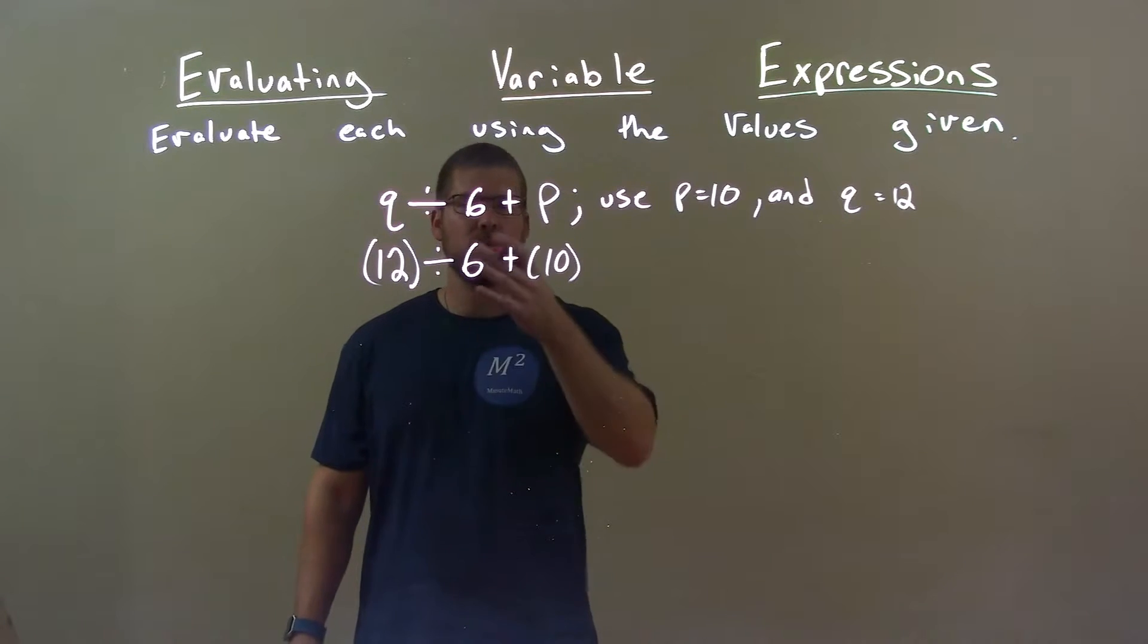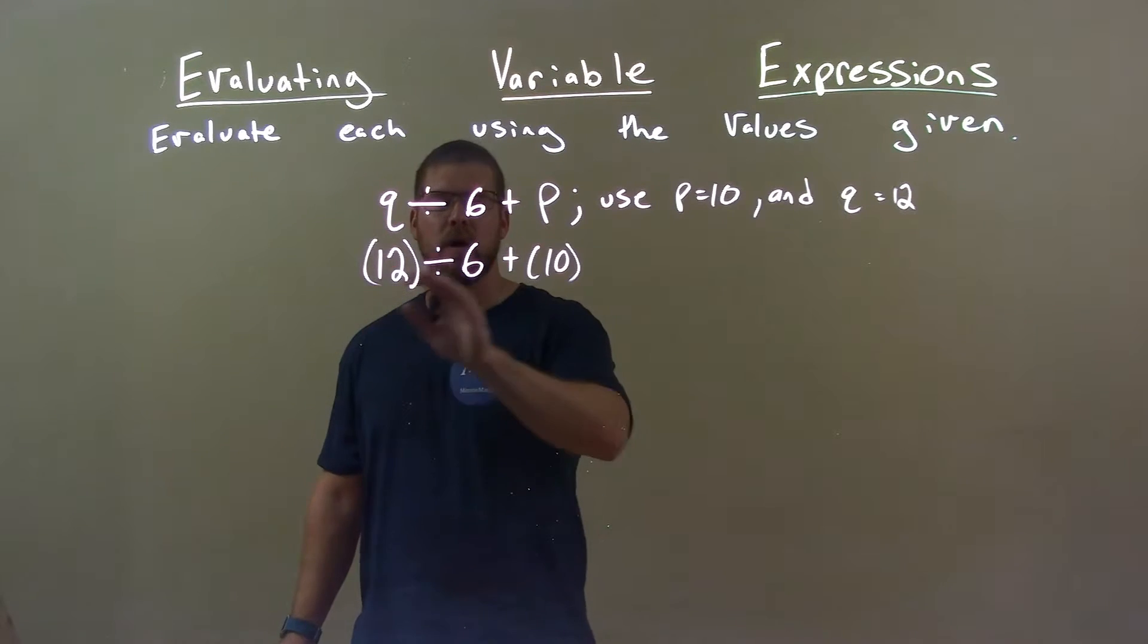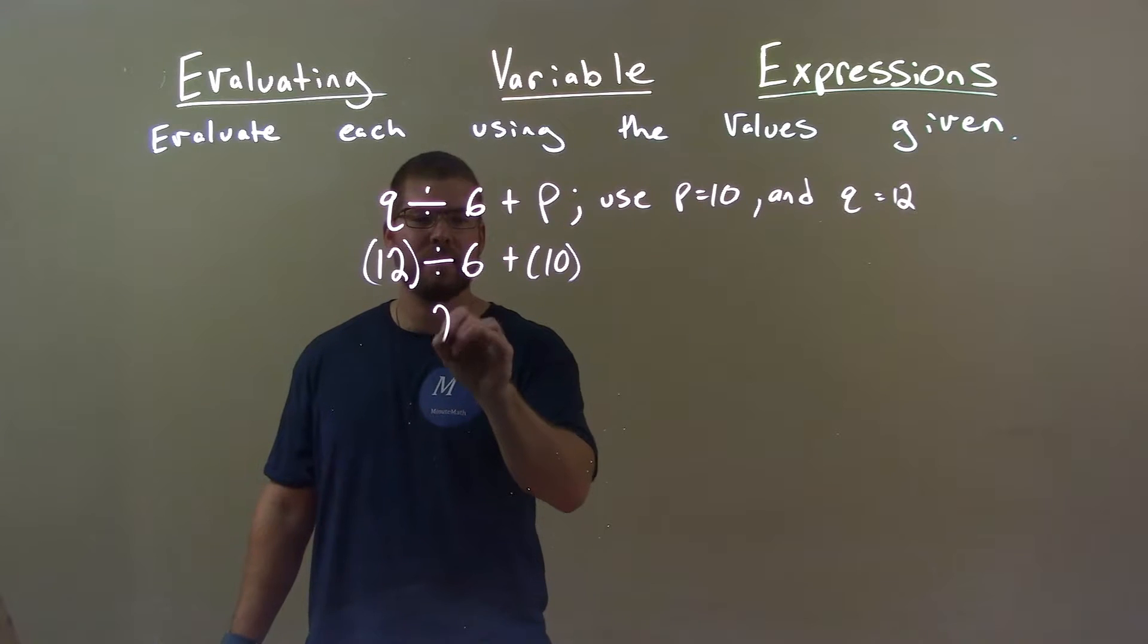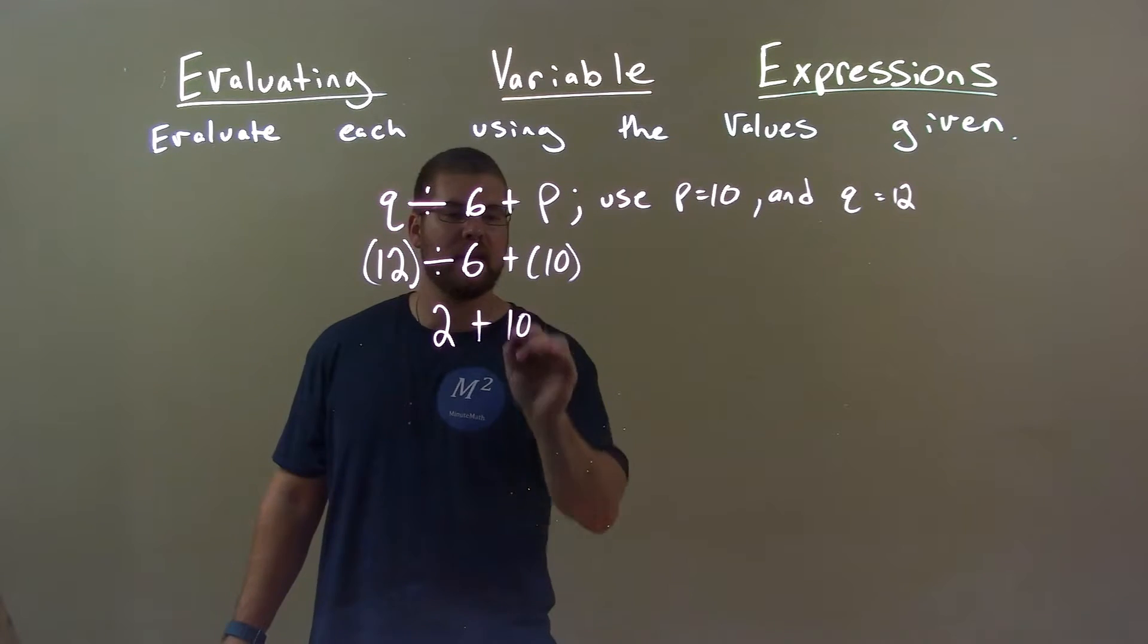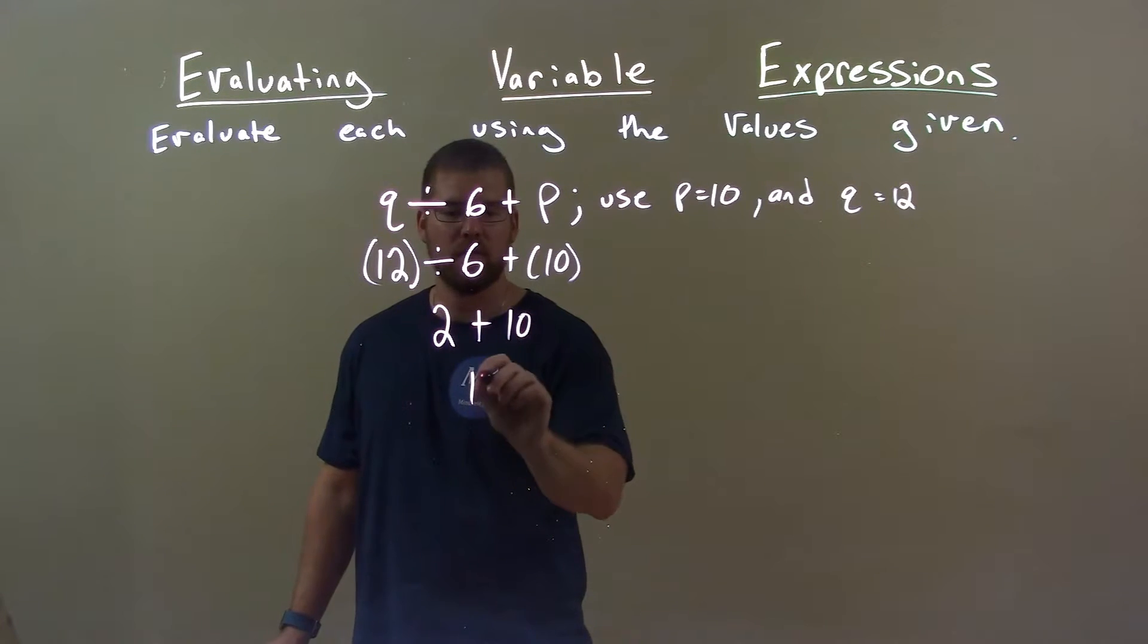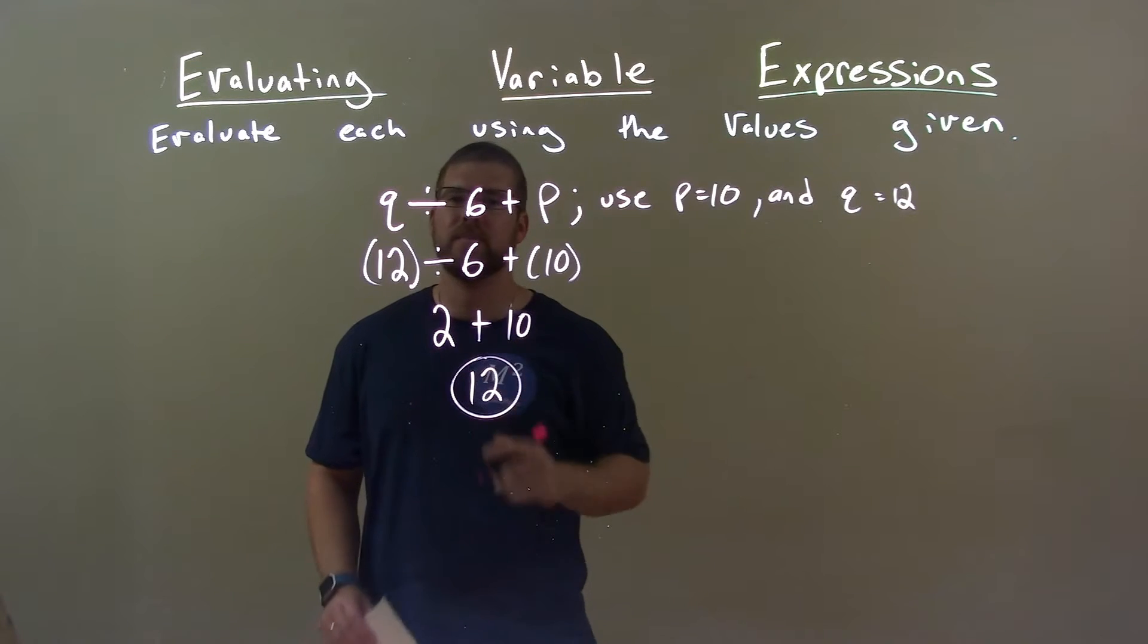So now it's a simplification with the order of operations. 12 divided by 6 comes first and that's 2, plus the 10 comes down. 2 plus 10 is 12. So final answer here is just 12.